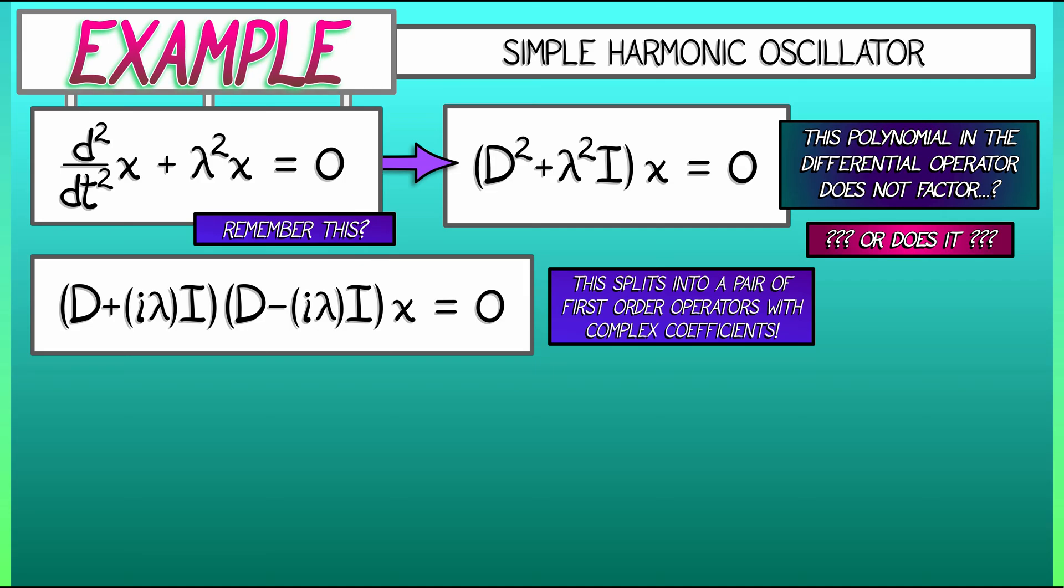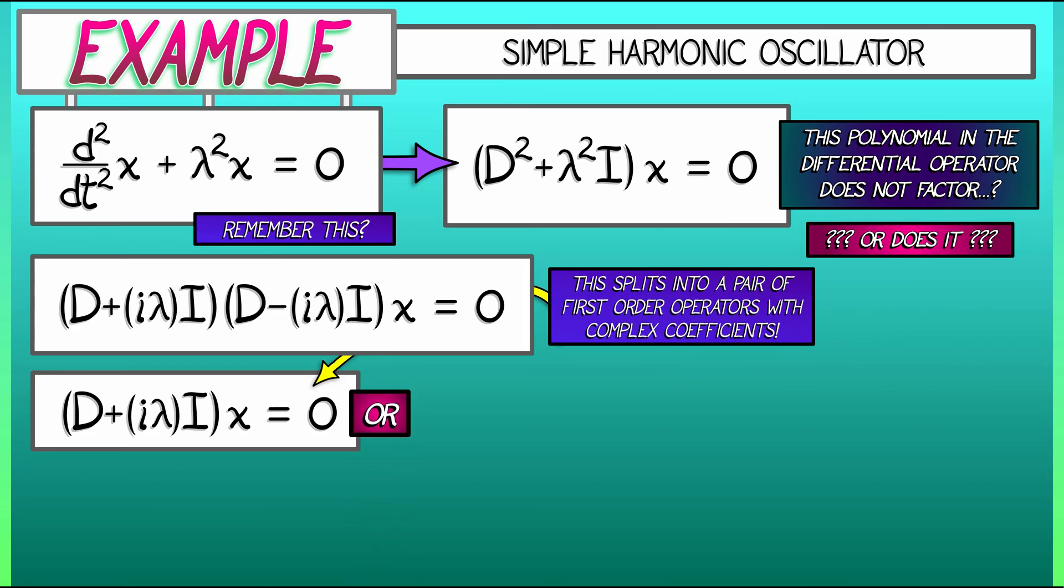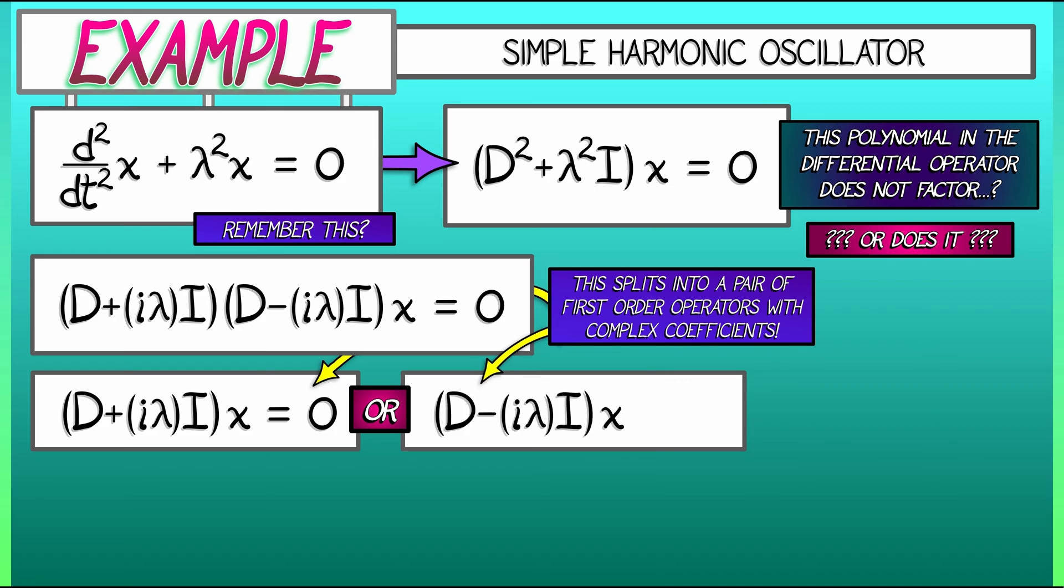It splits into these two first-order pairs using complex coefficients. So what does this mean? What this means is that either d plus i lambda times i applied to x is zero or d minus i lambda times capital I applied to x equals zero. This is a pair of first-order differential equations written in operator form.